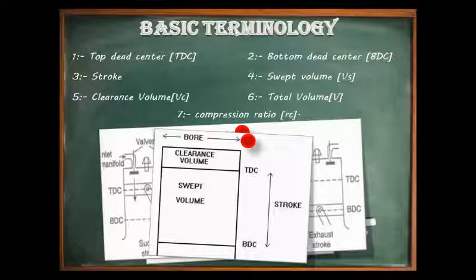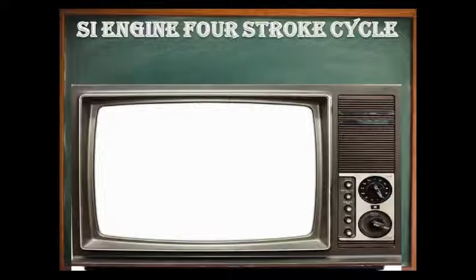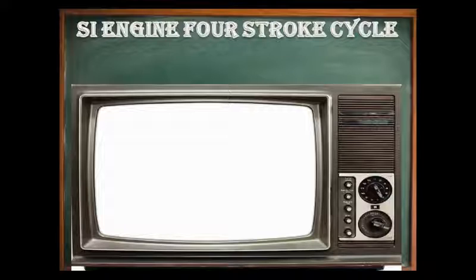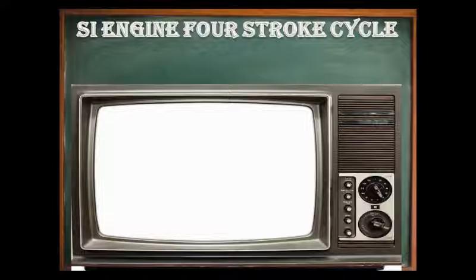Now let us discuss the working cycle of the four stroke spark ignition, that is SI engine. A four stroke spark ignition engine is an Otto cycle engine. It consists of four strokes: suction or intake stroke, compression stroke, expansion or power stroke, and exhaust stroke. Each stroke consists of 180 degrees of crankshaft rotation, and hence a four stroke cycle is completed through 720 degrees of crank rotation. For one complete cycle there is only one power stroke while the crankshaft turns by two revolutions.